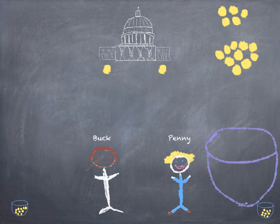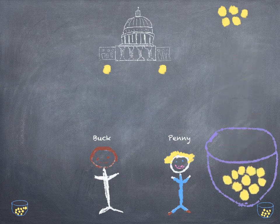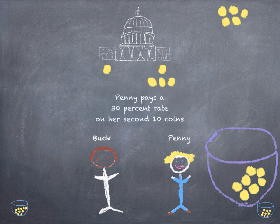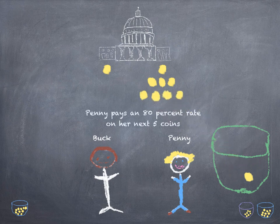But Penny earned more than 10 coins. Continuing this example, we'll say that the tax rate on income earned beyond 10 coins, but only up to 20 coins, is 30%. So for the next 10 coins of Penny's income, she'll pay 3 coins in taxes. And finally, we'll say that all income above 20 coins will be taxed at 80%. So Penny's tax on the 5 coins she earned after her first 20 coins will be 4 coins.